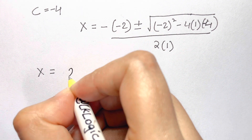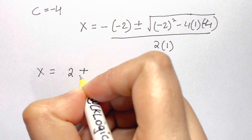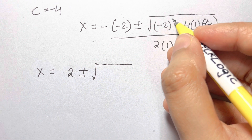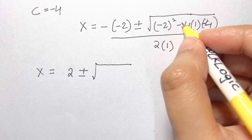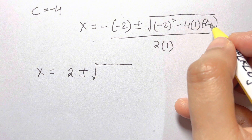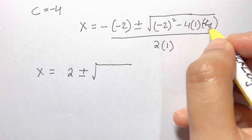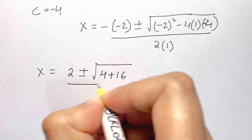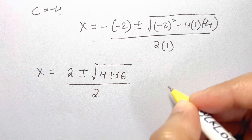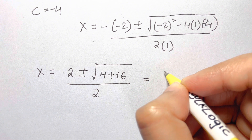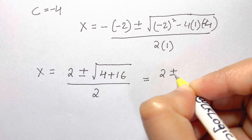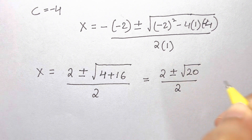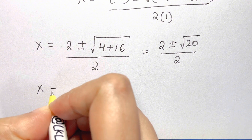Solving this: negative of negative 2 gives positive 2. Under the root: (−2)² is 4, and −4 × 1 × (−4) gives +16, so 4 + 16 = 20. We get 2 plus or minus square root of 20, all over 2.